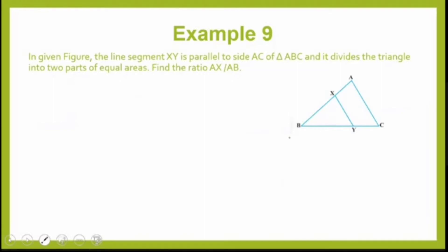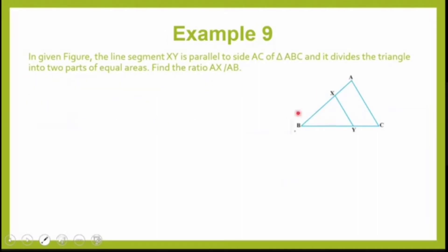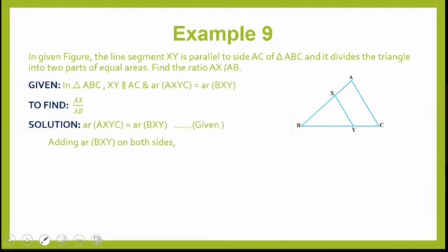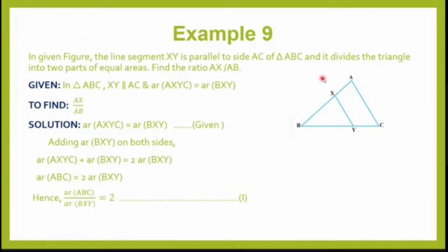I will prove triangle BXY similar to triangle BAC. Since XY is parallel to AC, therefore angle X will be equal to angle A, and angle B is the common angle. Therefore, by the AA rule of similarity, triangle BXY is similar to triangle BAC. Now, it is given that area of AXYC is equal to area of BXY, and they are parts of the same triangle. So area of triangle BXY will be equal to half of area of triangle ABC. Therefore, area of ABC upon area of XBY is equal to 2.